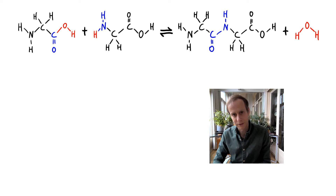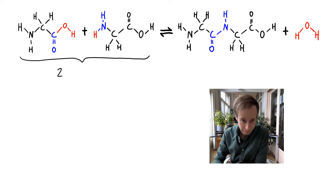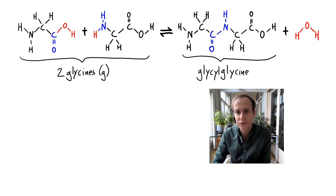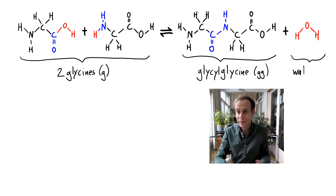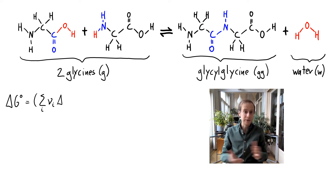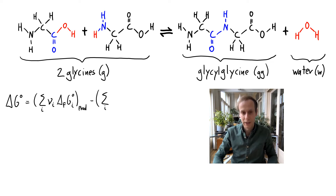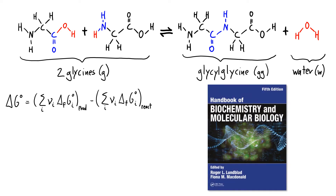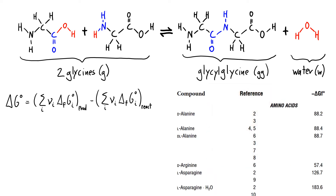Let's take a look at the Gibbs free energy for such a peptide bond formation. First, let's introduce the names: the two glycines will be abbreviated as G, glycylglycine as GG, and water as W. The free energy of the reaction at standard conditions can be calculated with the free energies of formation of the products and reactants — a formula familiar to us. To find those values, we look in a handbook of biochemistry and molecular biology.